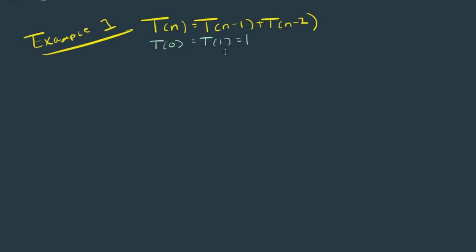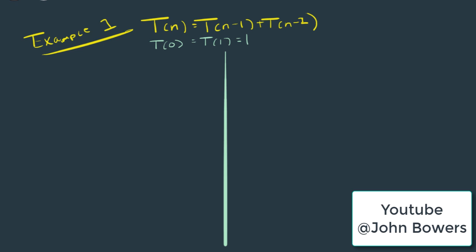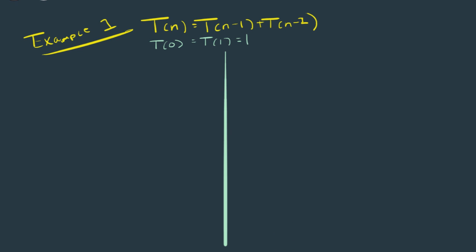Let's break up our problem using the substitution method. There's a good computer scientist on YouTube known as John Bowers who solves problems very similar to this. He likes to split the workspace into two segments: a workspace and a solution space. So when k equals 1, we just have our original T of n equals T of n minus 1 plus T of n minus 2. But we need to substitute these n minus 1 values into the original to come up with a recurring pattern. Since we have two recursive problems here, it can get a little tricky to solve.